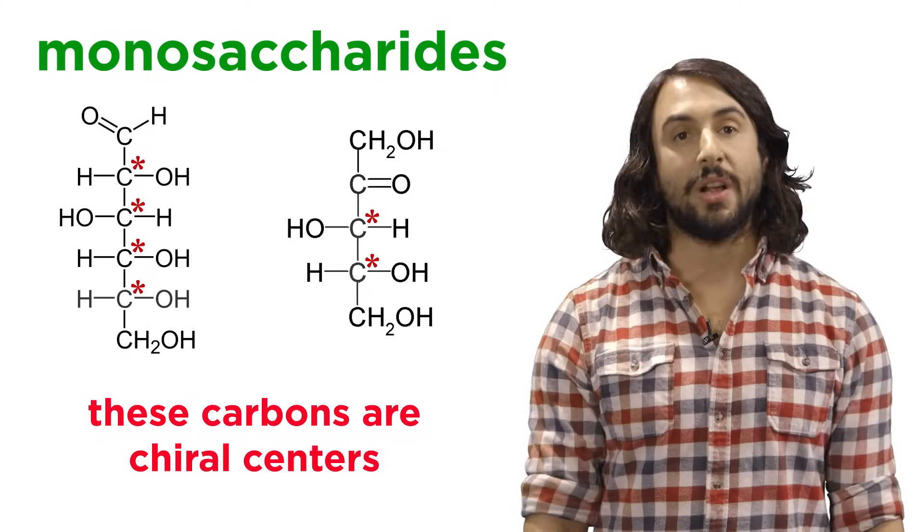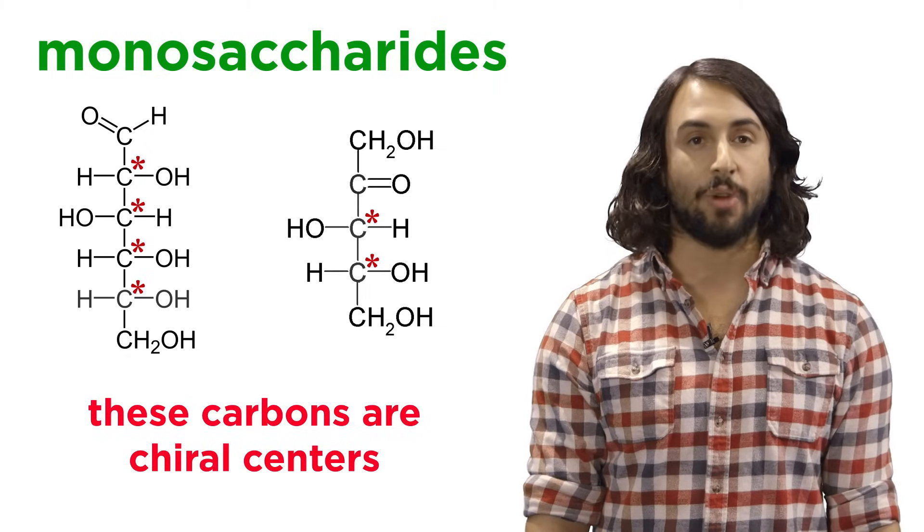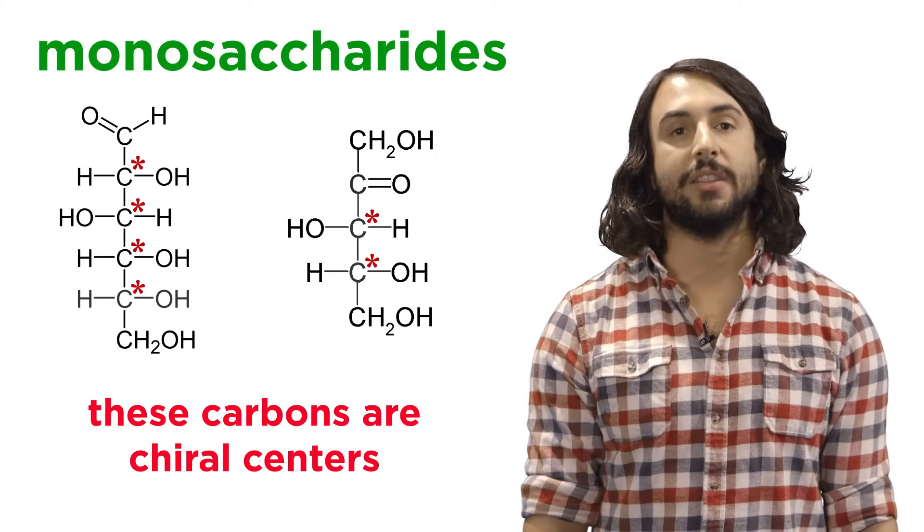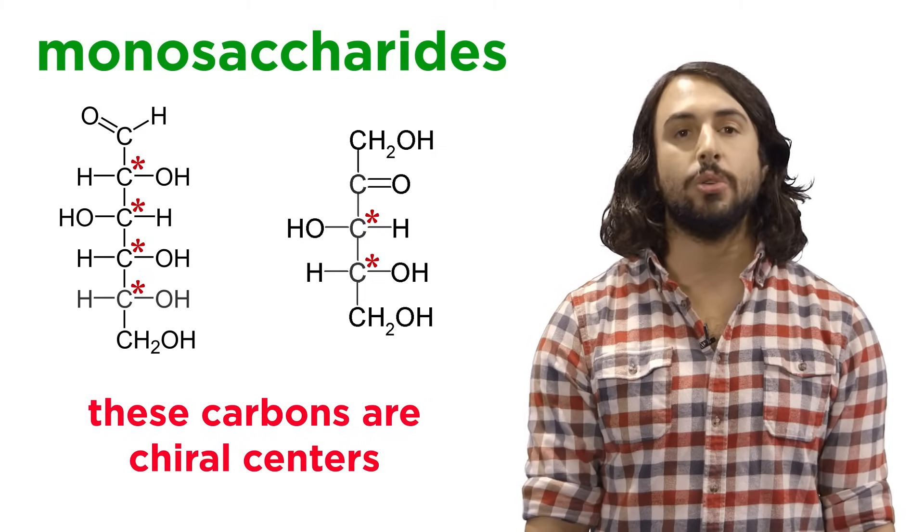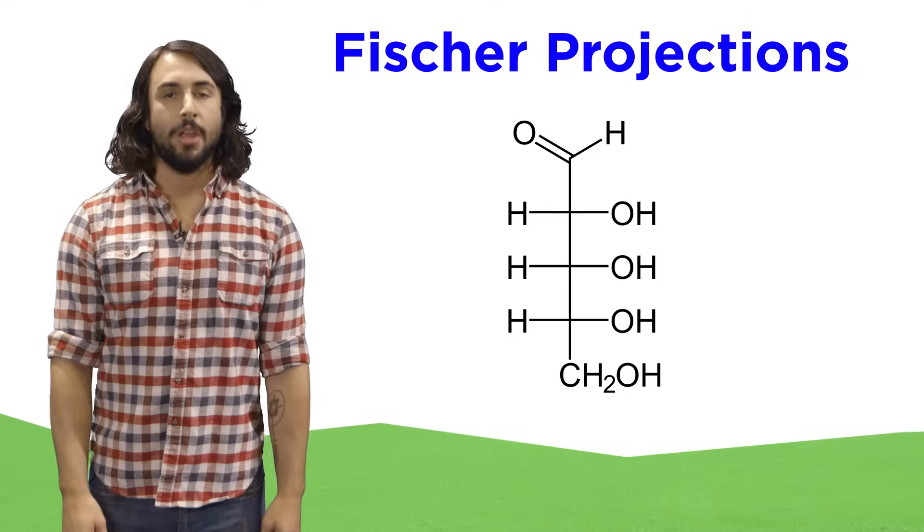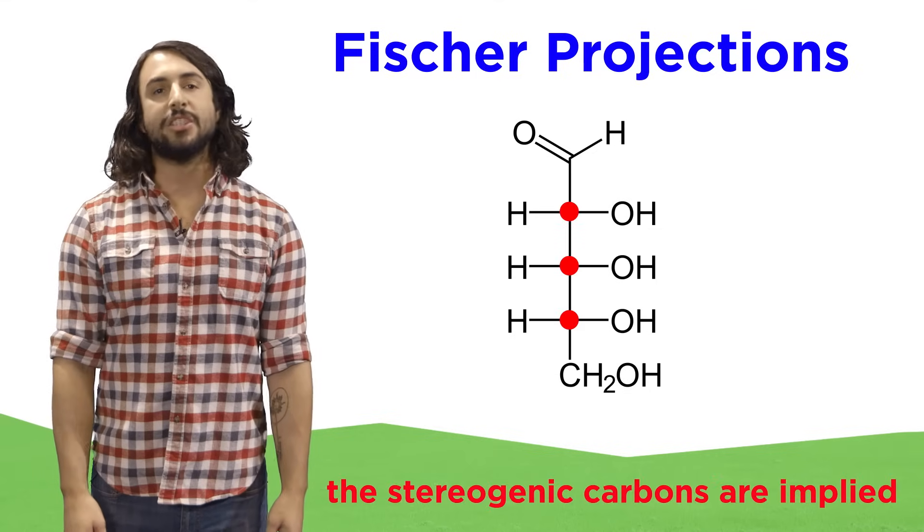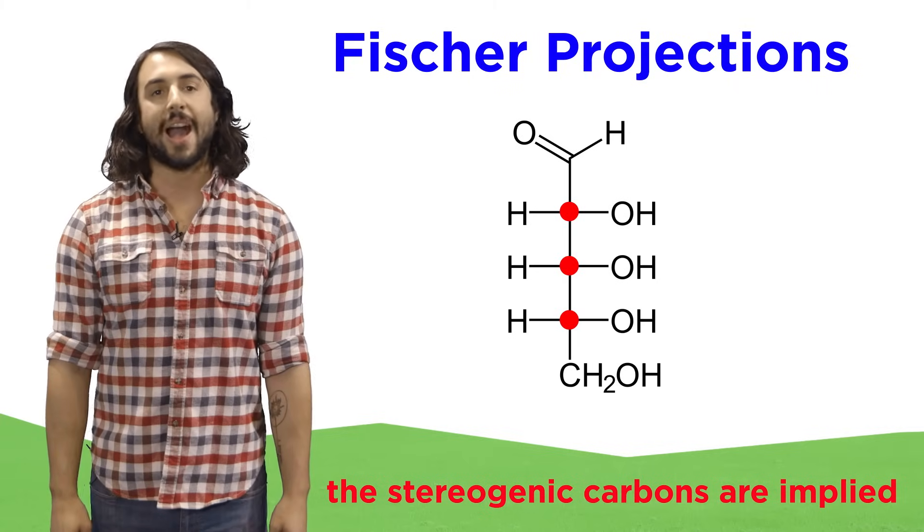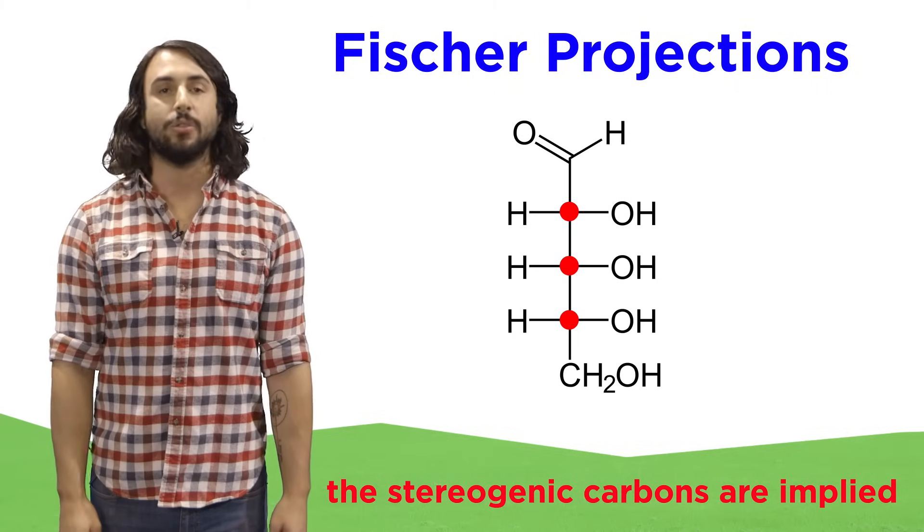Each of these carbons, the ones that bear both a hydrogen and a hydroxyl, will be a chiral center, and the convention for drawing linear monosaccharides is to use Fischer projections. When we look at these, it is important to understand that each vertex is a stereogenic carbon, and we show the hydrogens and hydroxyls on either side.